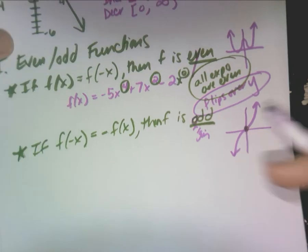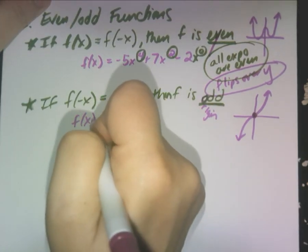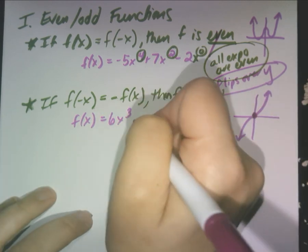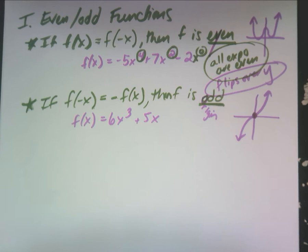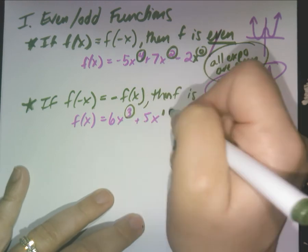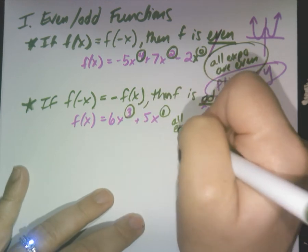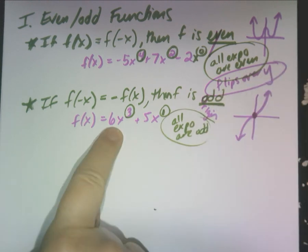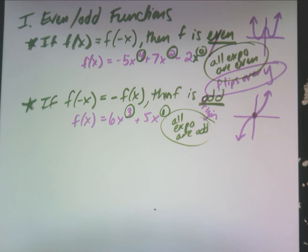If they give you an equation like 6x³ + 5x, and all of the exponents are odd — every single one, and there is no standalone number — then you have origin symmetry. You don't even need to put that in your calculator. Some functions you will have to check in your calculator just to confirm.